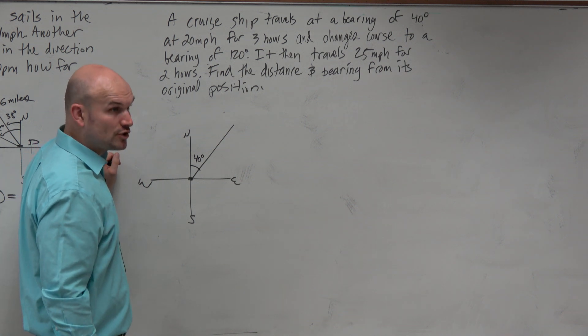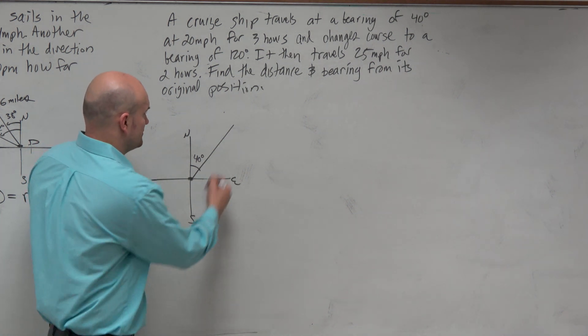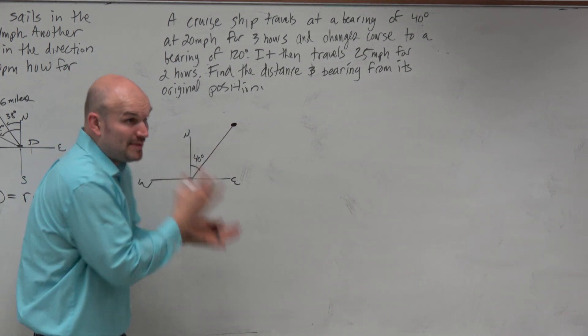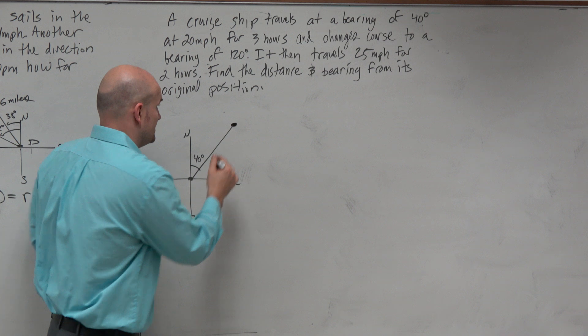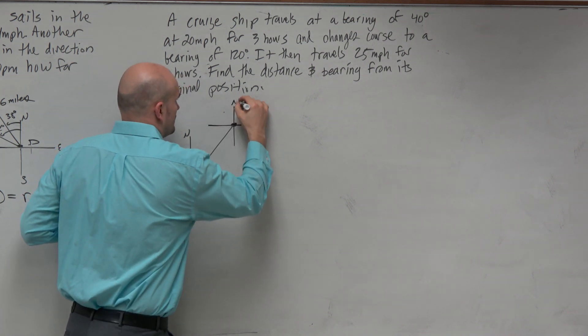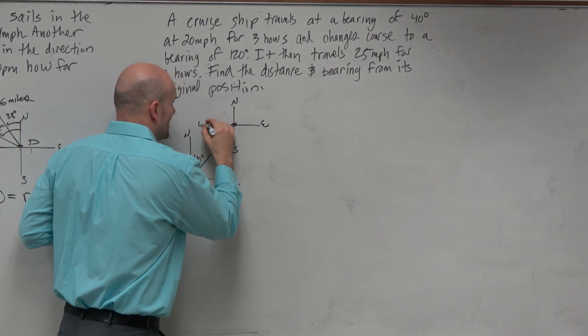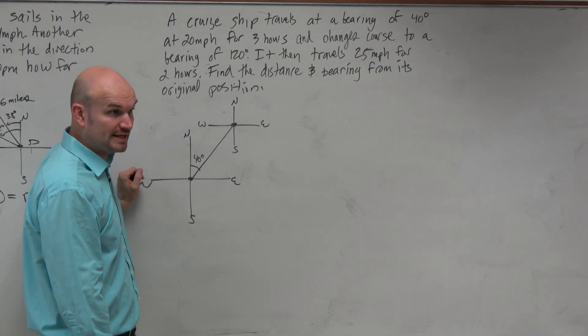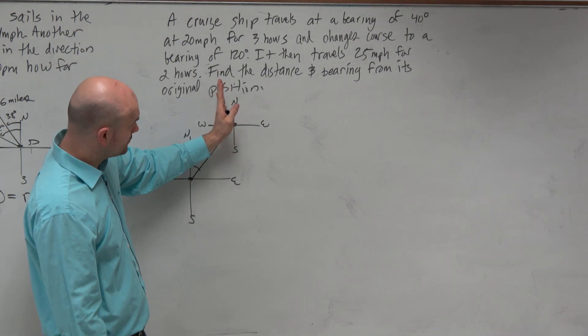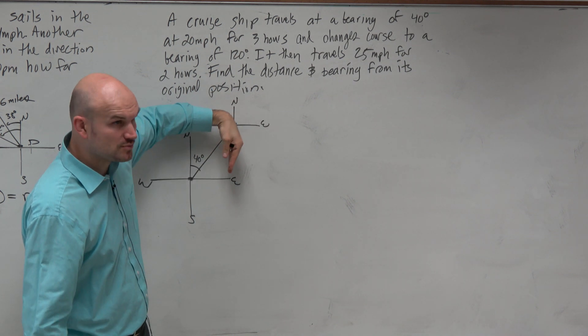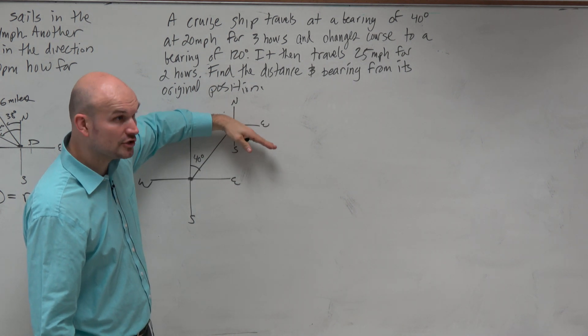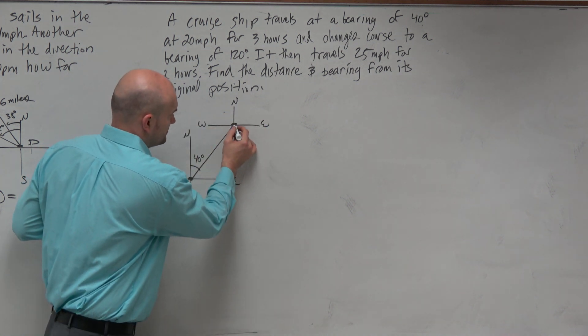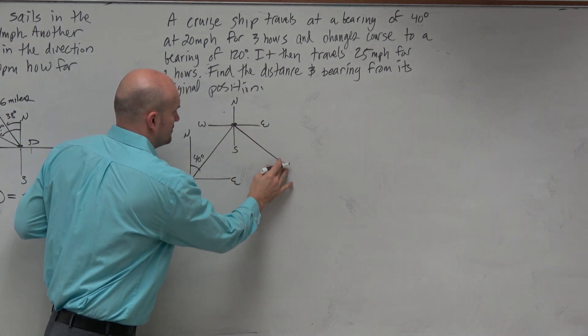Then it says it's going to change course. Now obviously we know they don't turn on a dime, but play with me here. So we have a new bearing. Whenever you have a bearing, you create a compass heading. North, east, south, west. Now you need to turn 120 degrees. So you start due north. From here to here is 90, from here to here is 180. So 120 is just going to be 30 degrees more than 90. It's going to be somewhere right around there.